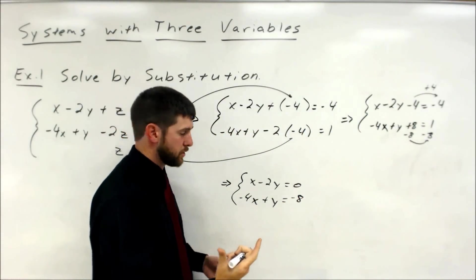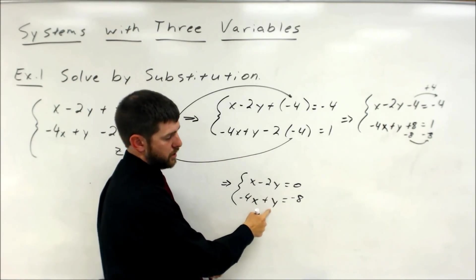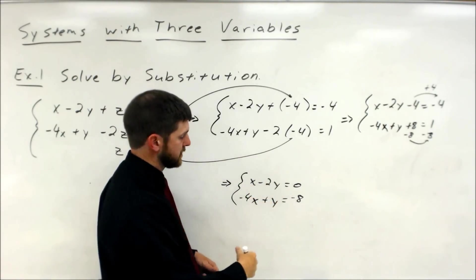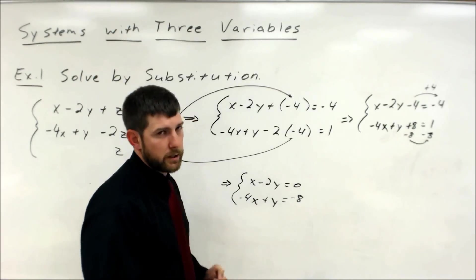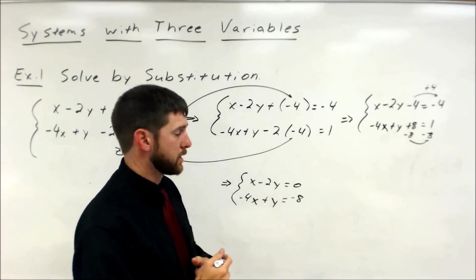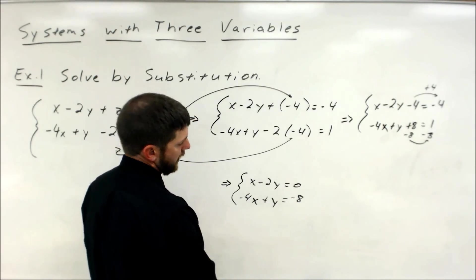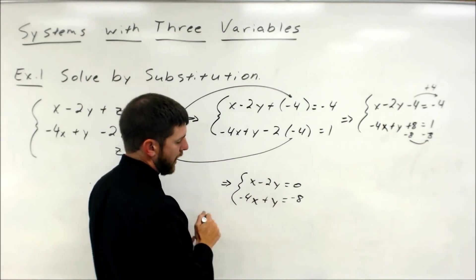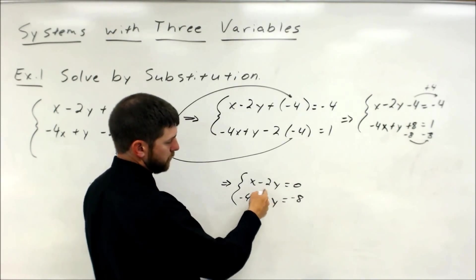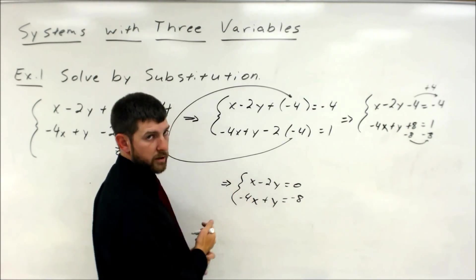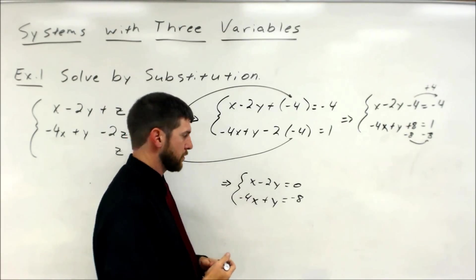From there, you could do a substitution if you wanted to. Since y has a coefficient of 1, it's easy to solve for; x has a coefficient of 1, it's easy to solve for. So I like linear combination — it goes a little bit faster. I think picking the y's to get rid of gives smaller numbers to work with.